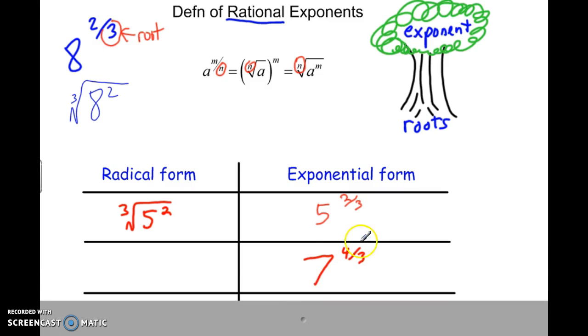We should be able to go the other way as well. So this, we can write it in radical form. So we can use a radical. We can put 7 inside there. The root goes out here. That's the little index. It would be 3. And then it's 4th power. You have a choice. You could put the 4 right there.